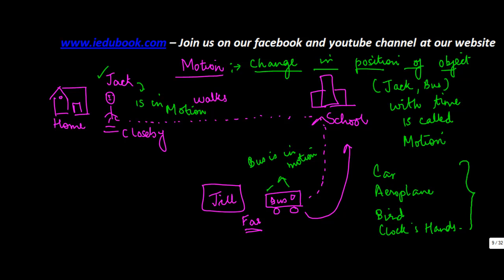So motion is basically change in position of an object with time. As time moves on, the object changes its position from one place to the other. Jack changed his position from his home to the school.